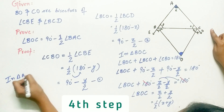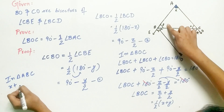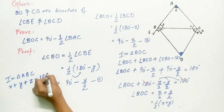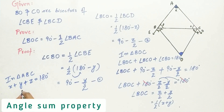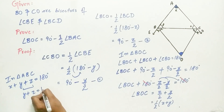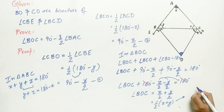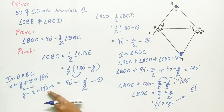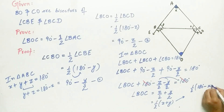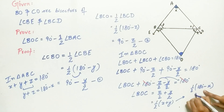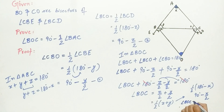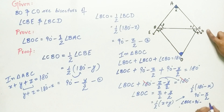In triangle ABC, by the angle sum property, angle X plus angle Y plus angle Z equals 180 degrees. Therefore, Y plus Z equals 180 degrees minus X. Substituting: angle BOC equals one-half of (180° − X), which gives 90 degrees minus X by 2. Since X is angle BAC, we get angle BOC equals 90 degrees minus half of angle BAC. Hence, proved.